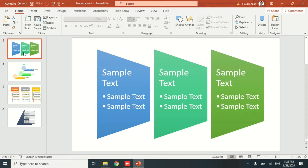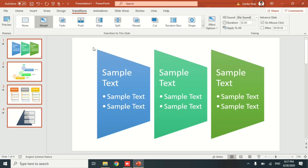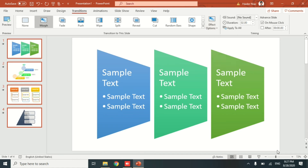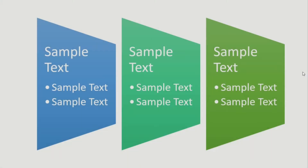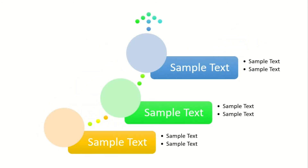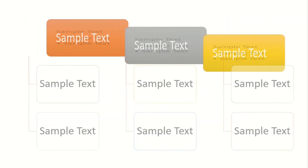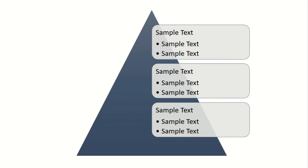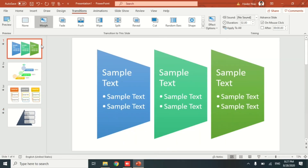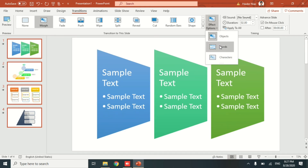Select all slides by pressing Ctrl+A. Then go to the Transitions tab and click on Morph — everything is done for you. There are different options: you can apply morph on words, objects, or alphabets. Morph transition changes the previous objects into the next ones using a smooth animation, as if the previous image is emerging and transforming into the next one — much smoother than fade or push animations.